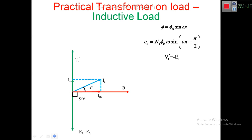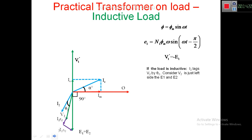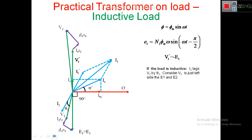Because of I2, there must be a primary component I1'. The resultant of I1' and Ie gives the primary current I1. Then we incorporate the resistive drop of the primary I1×R1 and the reactance drop j×I1×X1. Finally, V1 = V1' + I1×R1 + j×I1×X1. This is the complete phasor diagram explanation for the practical transformer on load with inductive load.